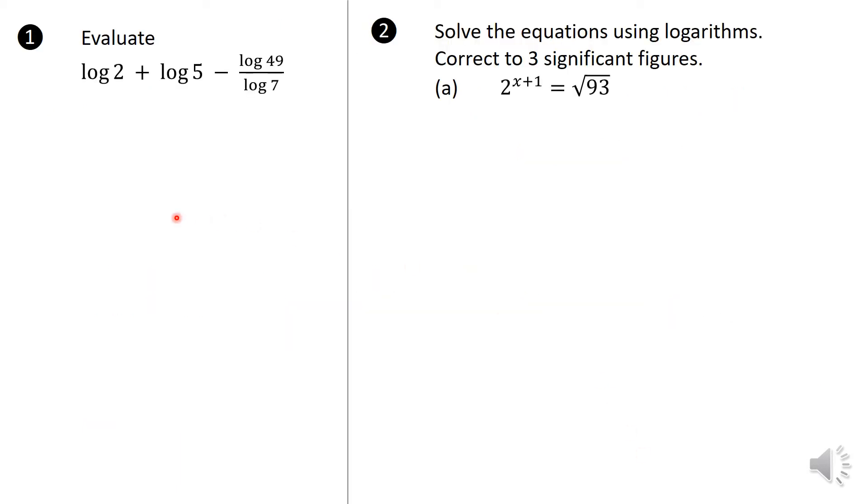Right, so I have the very first question here. What you need to realize is that log 2 plus log 5, well, you are adding logs of the same basis, you multiply the numbers. So this is 2 times 5, which will give us 10. And then 49 is nothing but 7 squared. So when you use the power law, you bring that 2 over, it becomes 2 log 7. And log 10 is equal to 1.